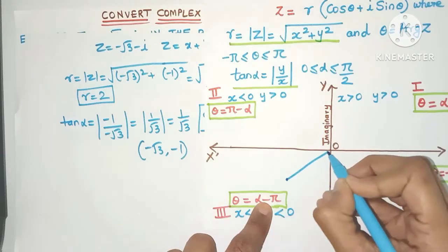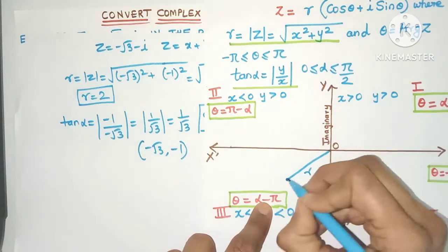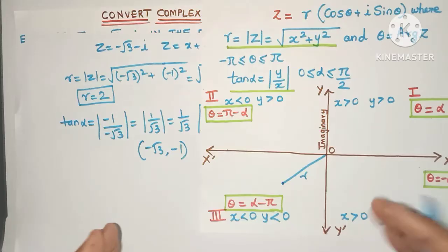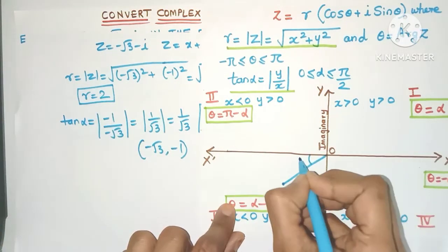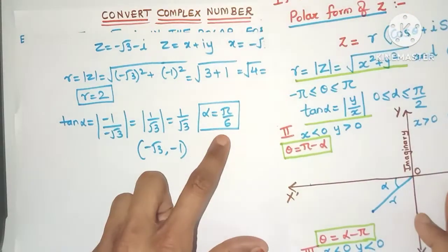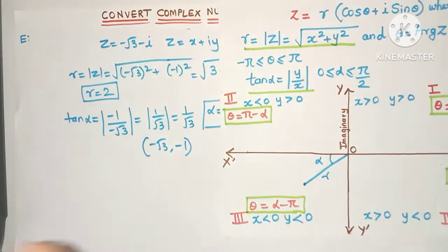Now if I join this point to the origin, this distance is the modulus of z, r, which you just now found out. And this alpha is my acute angle, see π/6. This is my alpha. So where is the theta?